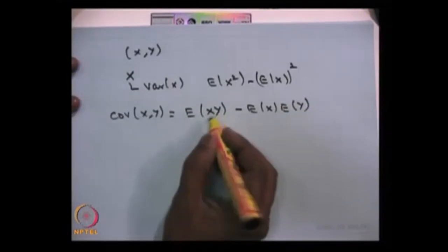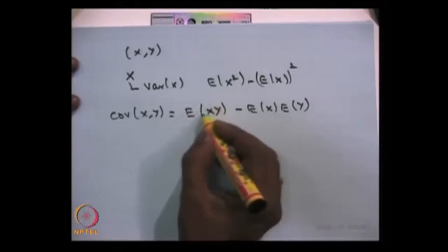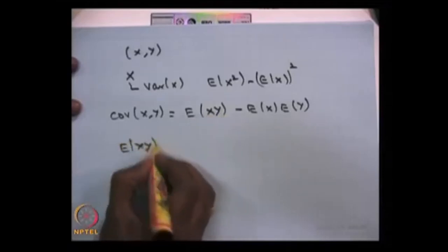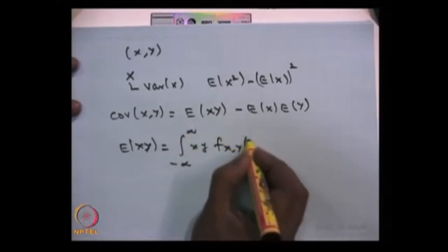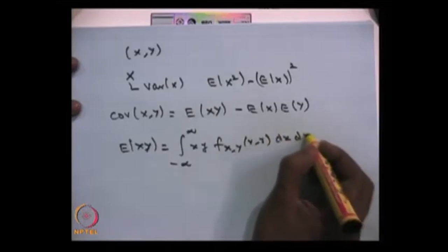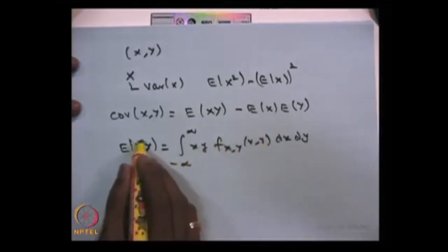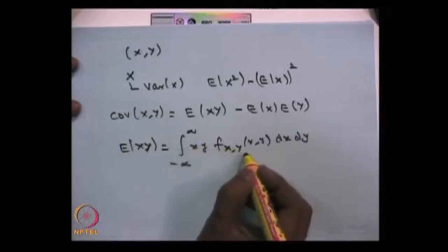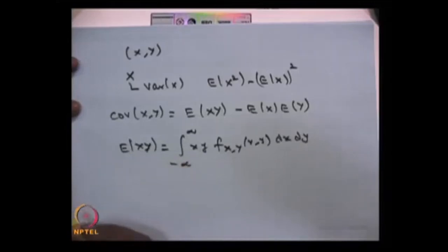To compute E[XY], based on whether the random variables are discrete or continuous, you can use the functions-of-random-variable method. Note that even if you do not know the distribution of XY directly, you can still find E[XY]. If both random variables are continuous, the expectation of XY is the double integral of x times y times the joint probability density function f(x,y) over all x and y, provided absolute convergence holds.